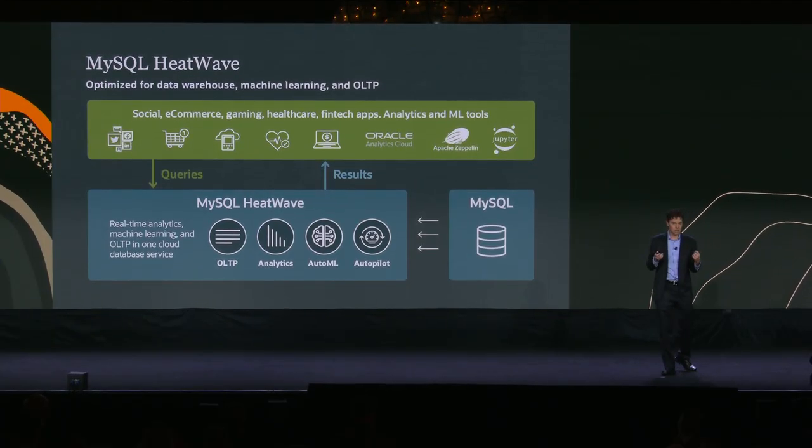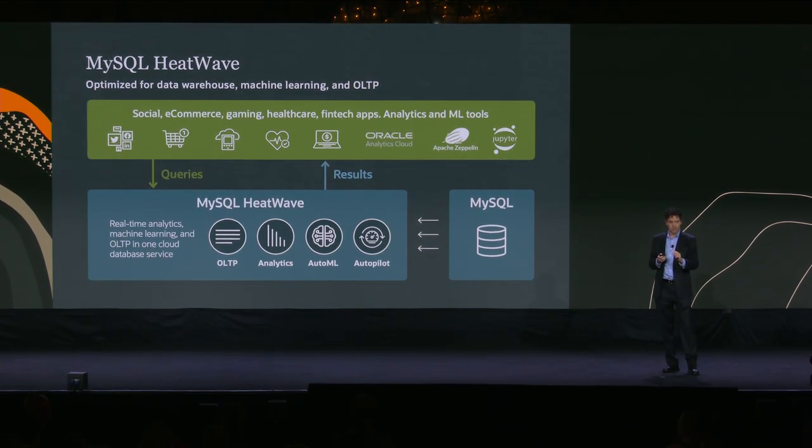MySQL HeatWave also includes AutoML. It's a collection of machine learning algorithms built into MySQL HeatWave, plus automation to choose the algorithm you need and to choose the hyperparameters. You just tell AutoML whether you want to do regression, classification, recommendations, or other machine learning goals, and AutoML built into MySQL HeatWave figures out what has to happen. It chooses the specific algorithms, the hyperparameters, manages the training, and does the inference — you do not use a separate service.